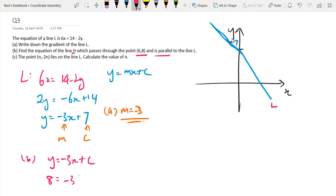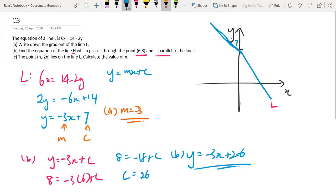8 equals minus 3 times 6 plus c. So 8 equals minus 18 plus c, and c equals 26. So the equation of the line y equals minus 3x plus 26. That is the answer for part B, the equation of the line H. And as you can see, the y-intercept is much higher, so the line is probably somewhere around here. So the line H is here.